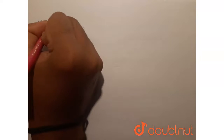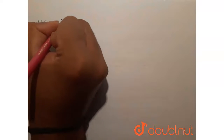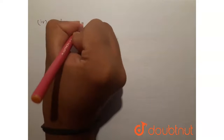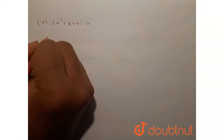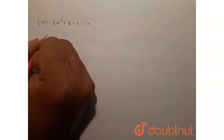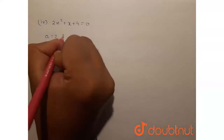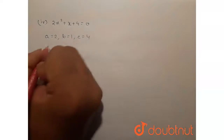Now let's move on to the last one, which is 2x squared plus x plus 4 equals 0. In this we have a equal to 2, b equal to 1 and c equal to 4.